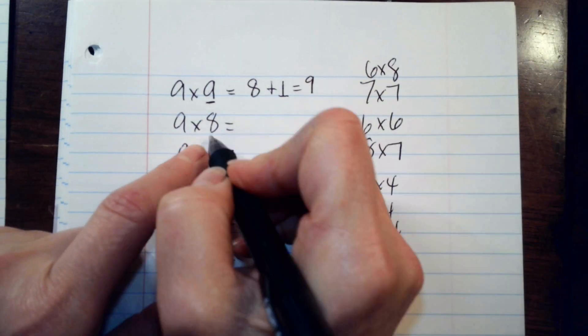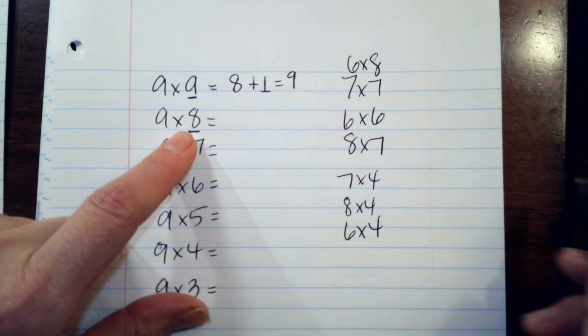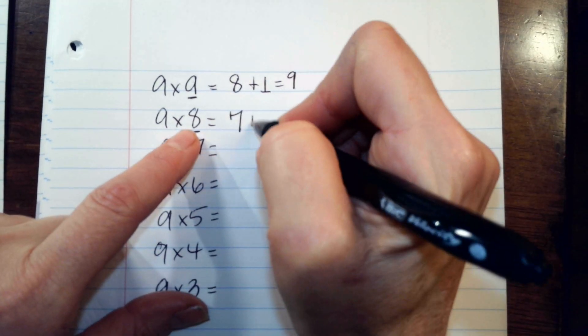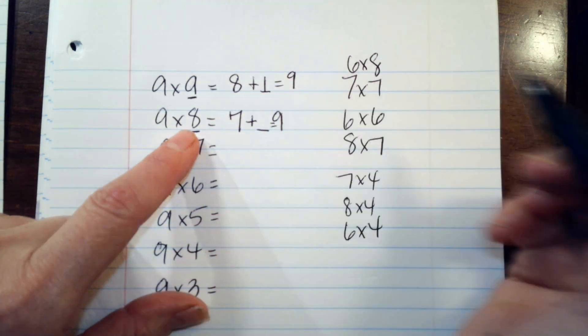This one is, what am I multiplying by nine? Eight. Eight. Something, one less, seven plus blank equals nine. Seven plus two. Yep.